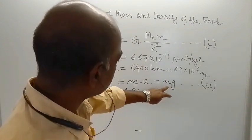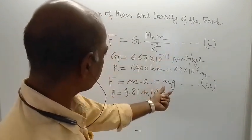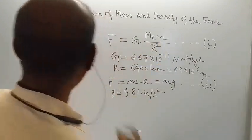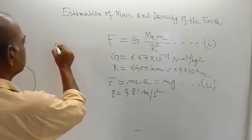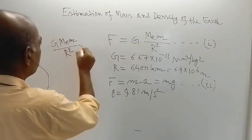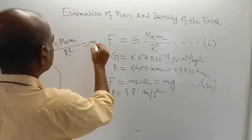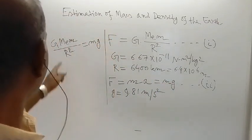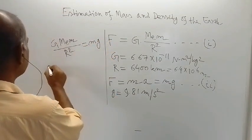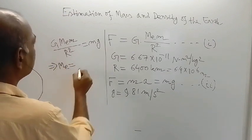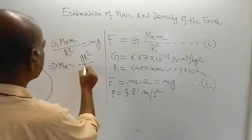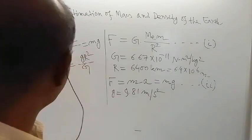If you combine equations 1 and 2, then you get: this is F and this is also F. So Mg is equal to this much. Writing it out: G times Mₑ times m divided by R square is equal to mg. From both sides, the small m's are cancelled. So what we are getting is: Mₑ is equal to g times R square divided by capital G.